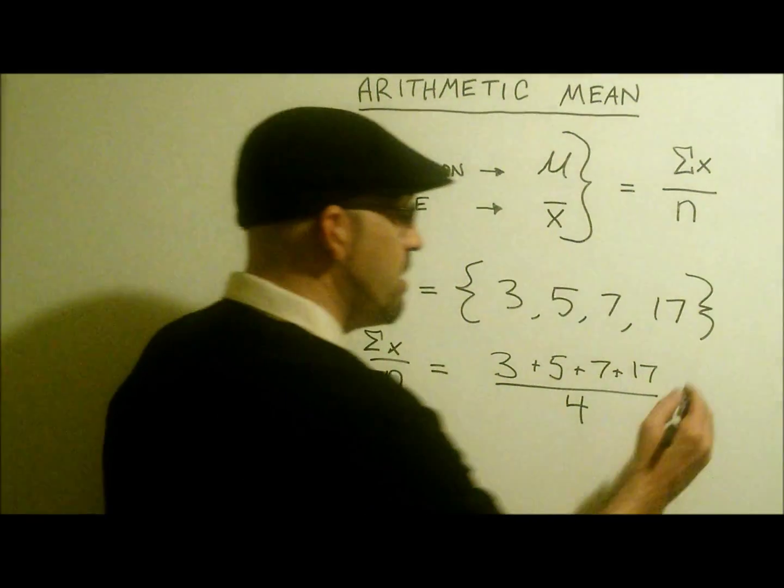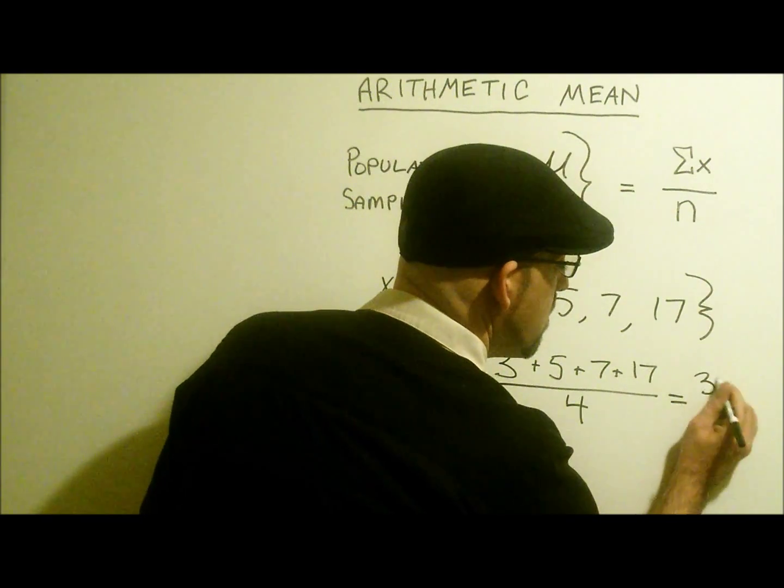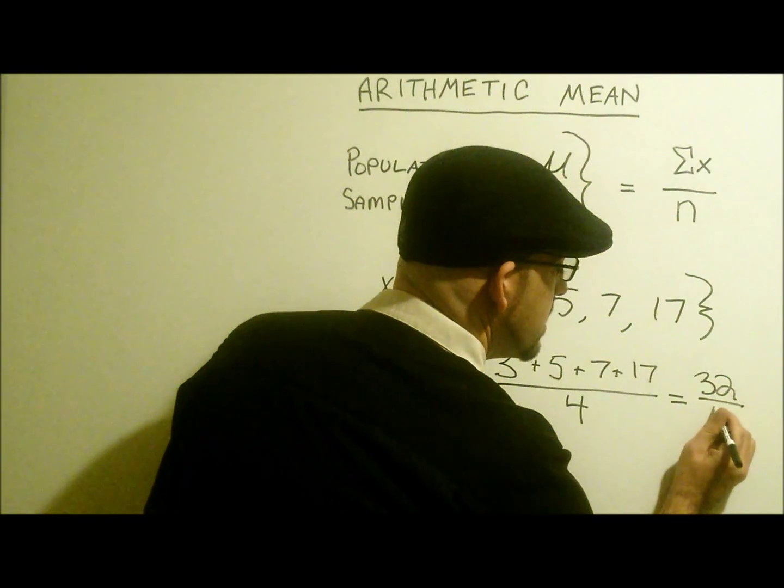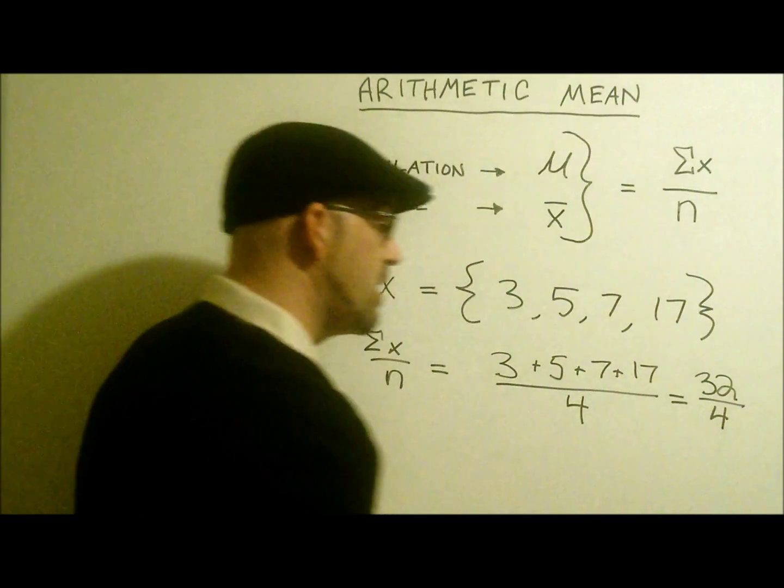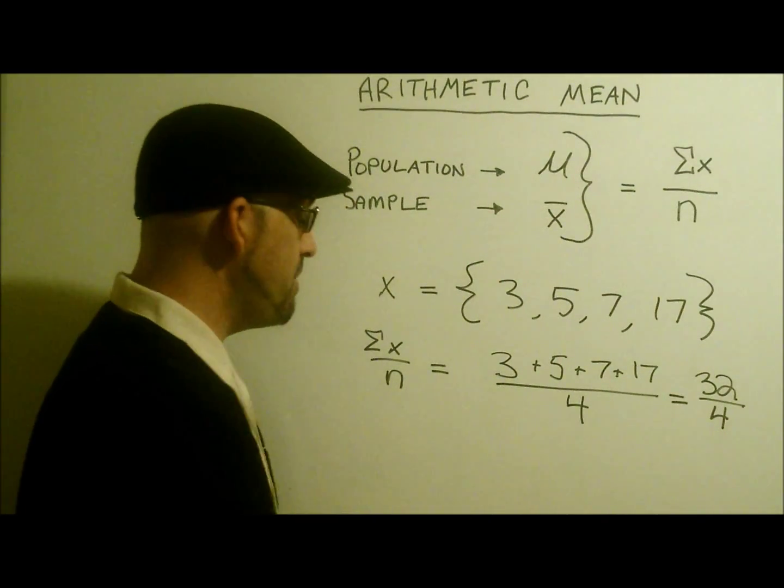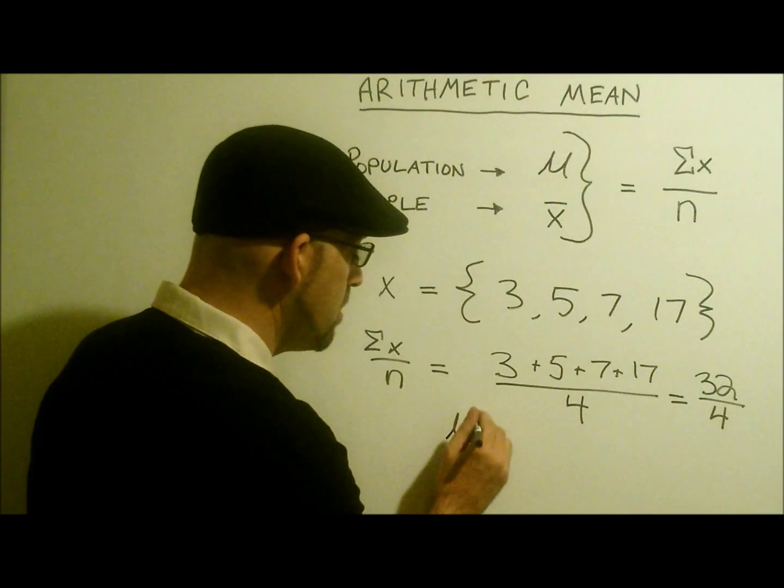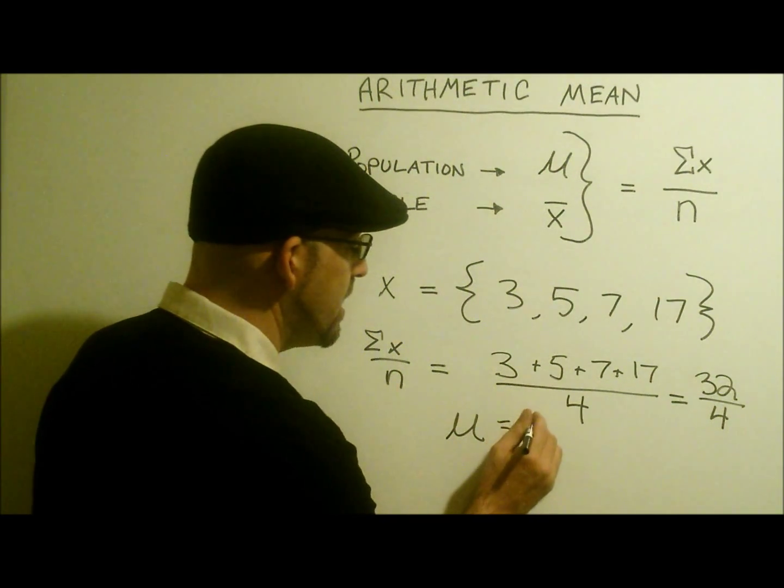Then we are left with 32 divided by 4, which we all know equals 8. That means our mu equals 8.